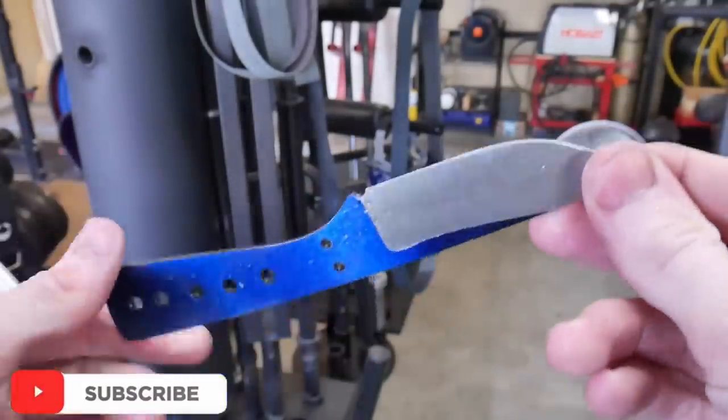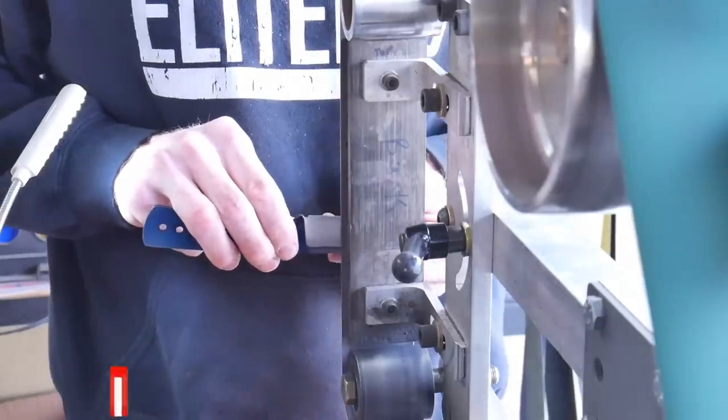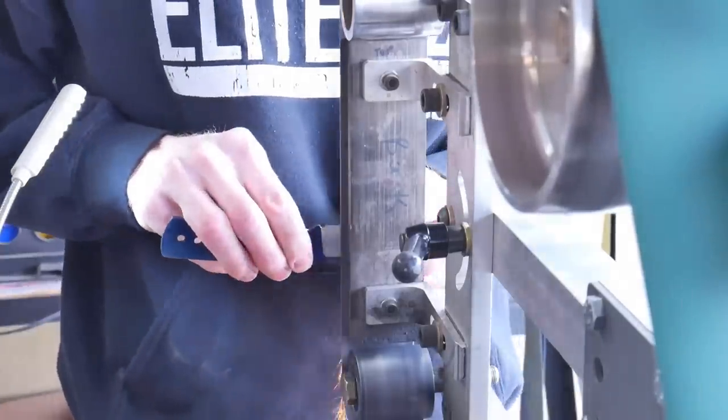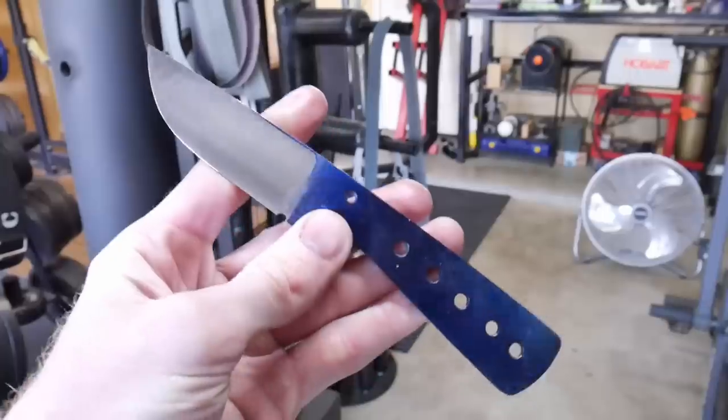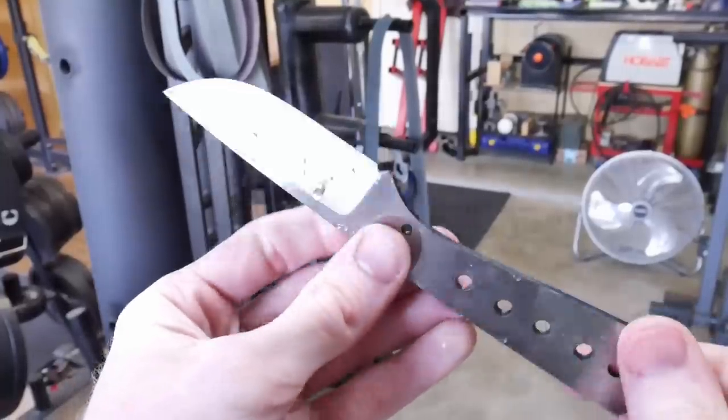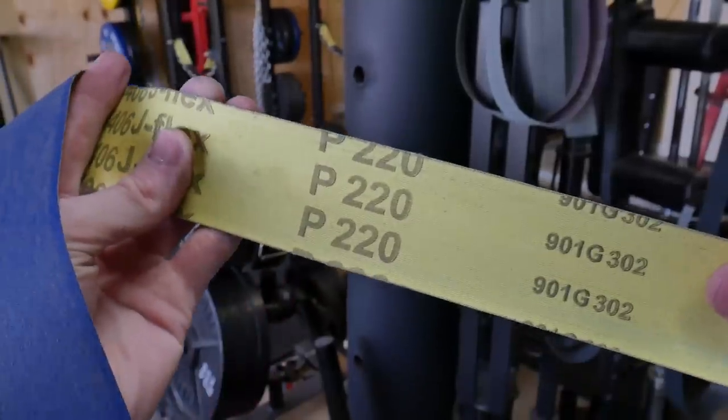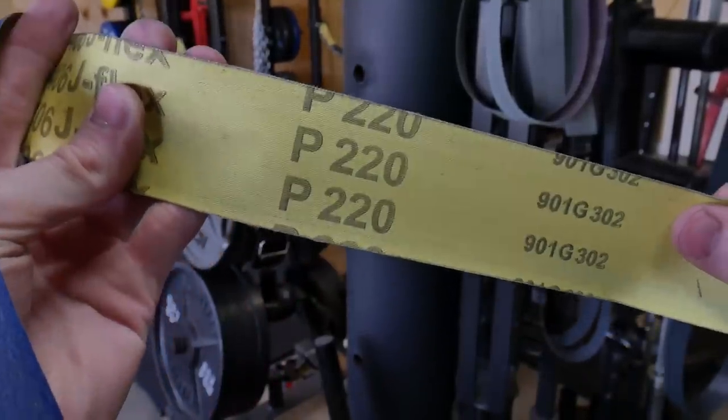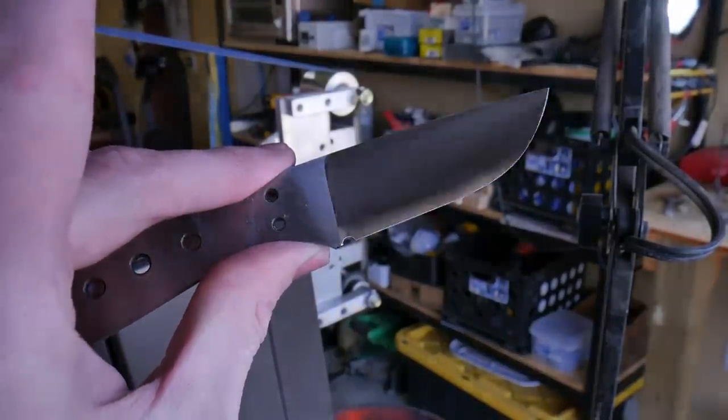After this 60 grit finish we move on to the 120 grit J-flex belt. At this point I'll start trying to radius my plunge lines and get them pretty close to lined up. This is what the 120 grit belt looks like on one side and the 60 on the other. Lastly I'll head on over to a 220 grit J-flex and these are the results from that.